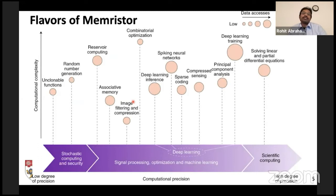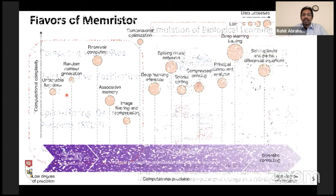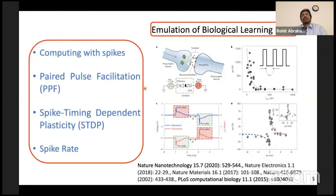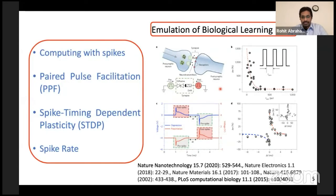We can also classify memristors based on what application we are targeting. Today I will focus my talk on perovskite memristor implementation specifically regarding spiking neural networks as well as physical unclonable functions. With regards to implementations of spiking neural networks, we look for inspiration from biology — studying how actual neurons and synapses work in the brain, and then trying to electrically map them onto our devices, whether memristors, mem-transistors, or any material we are interested in.